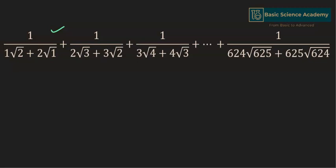Now, each of the terms in the denominator have two consecutive numbers. Here we have 1 and 2. Here we have 2 and 3. Here we have 3 and 4.